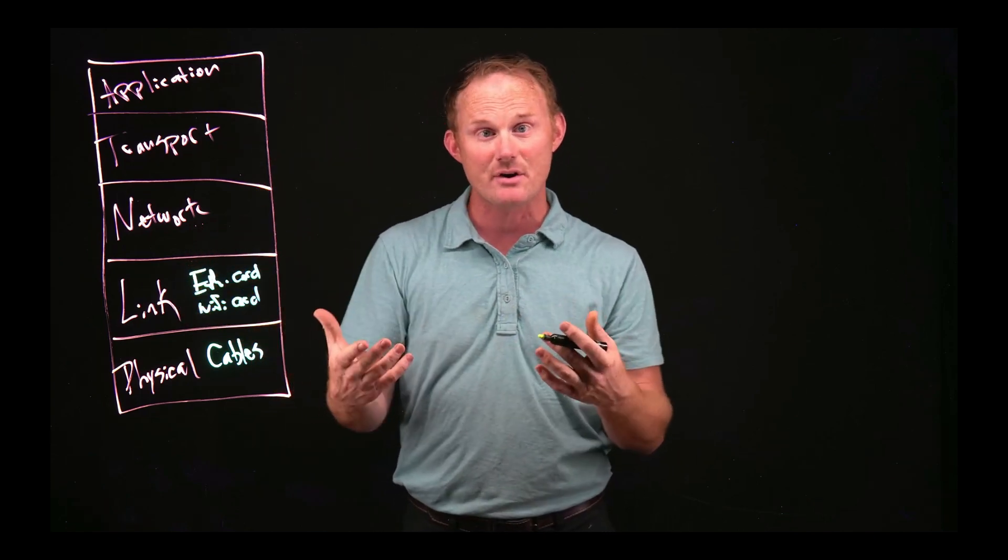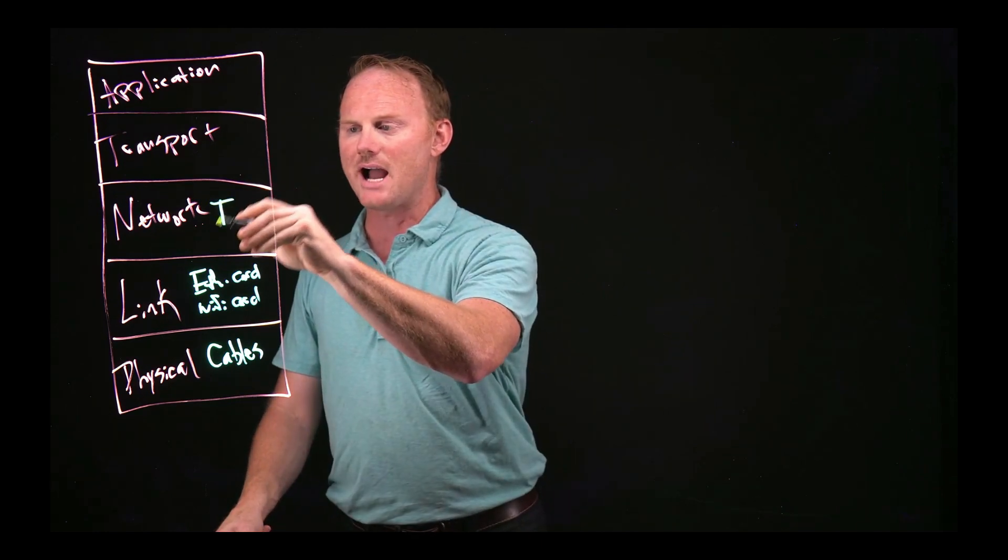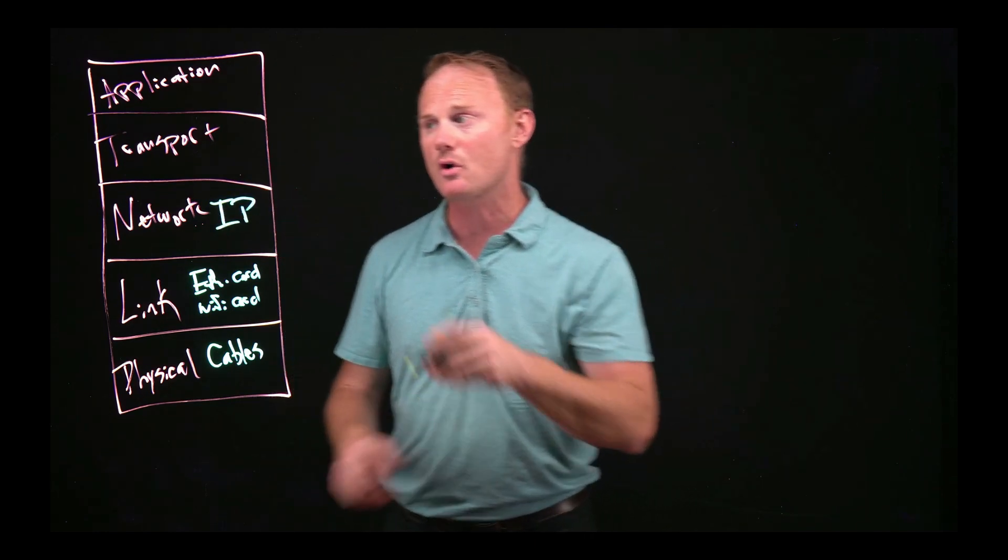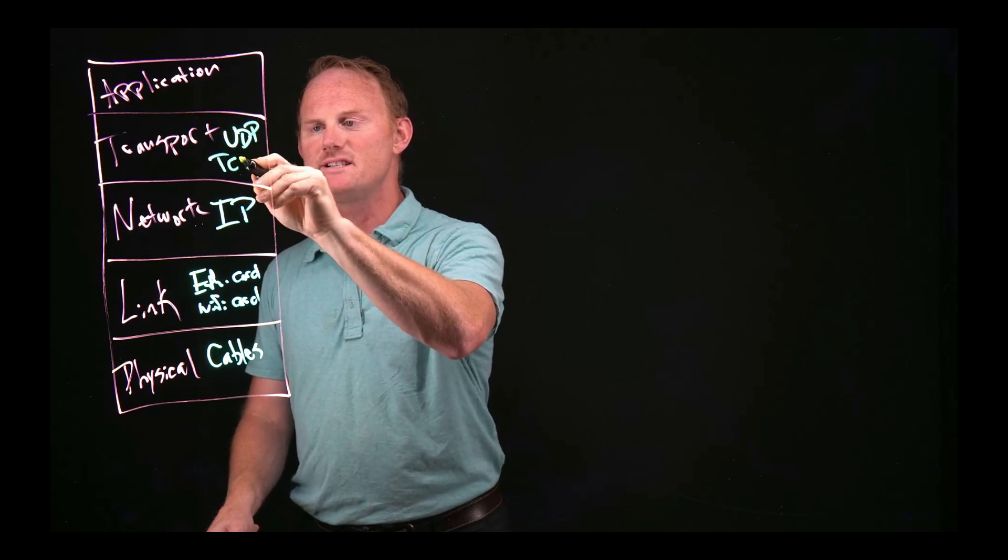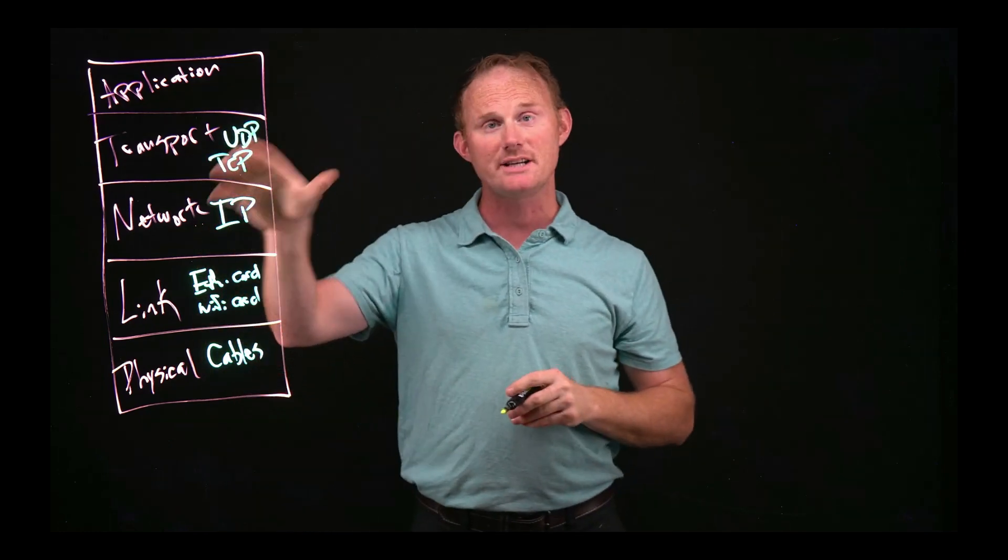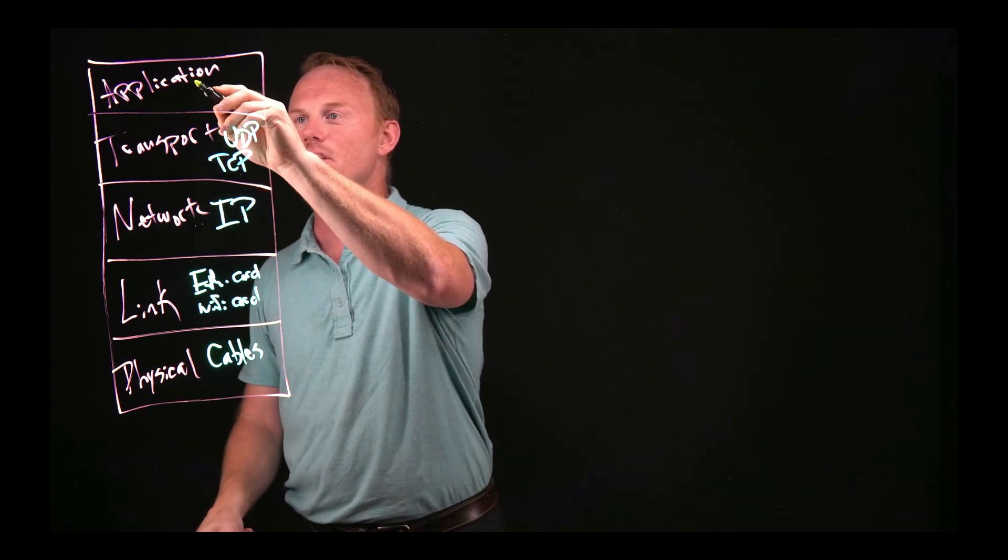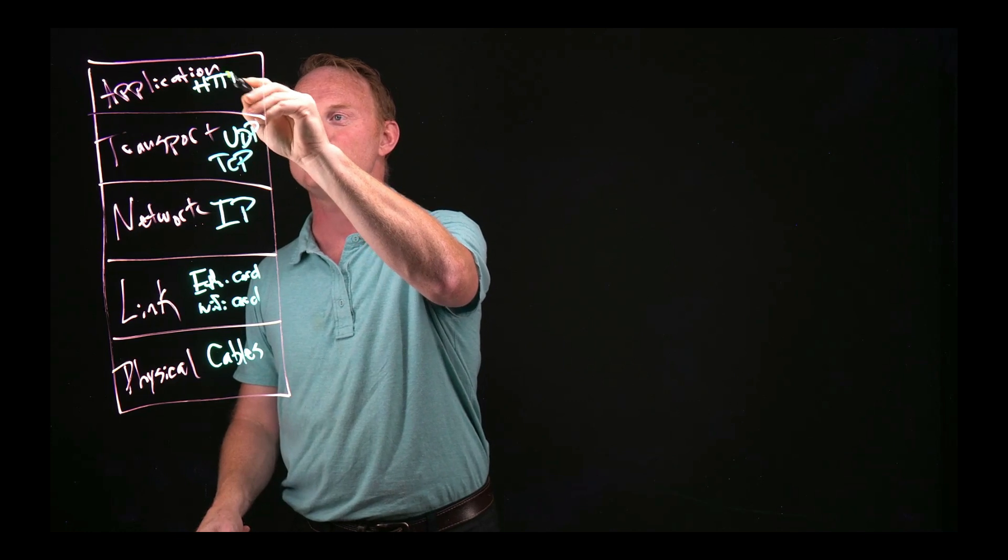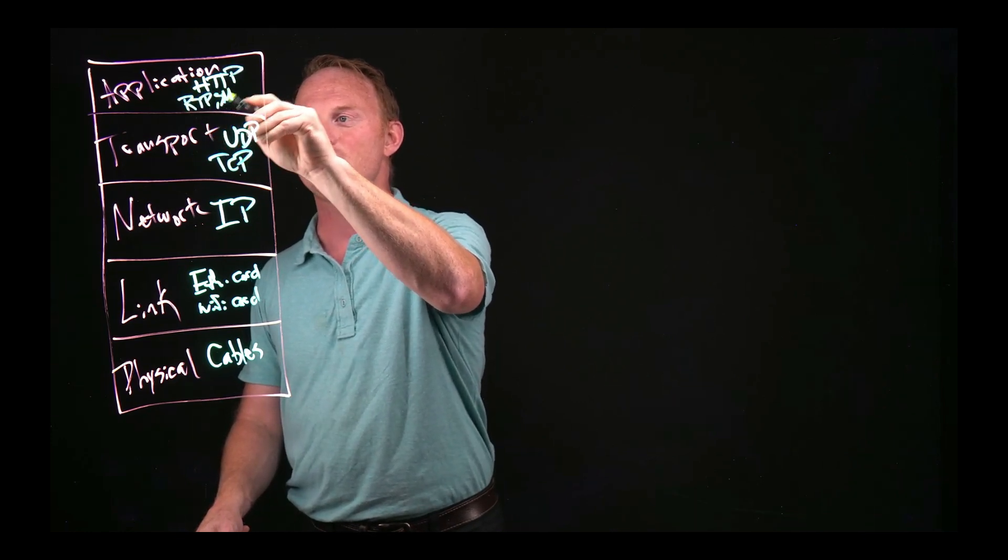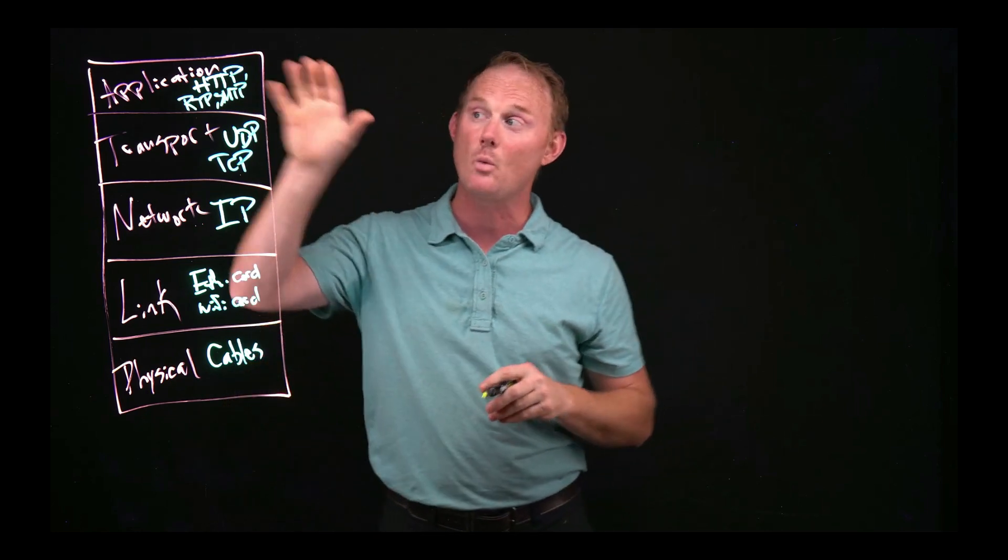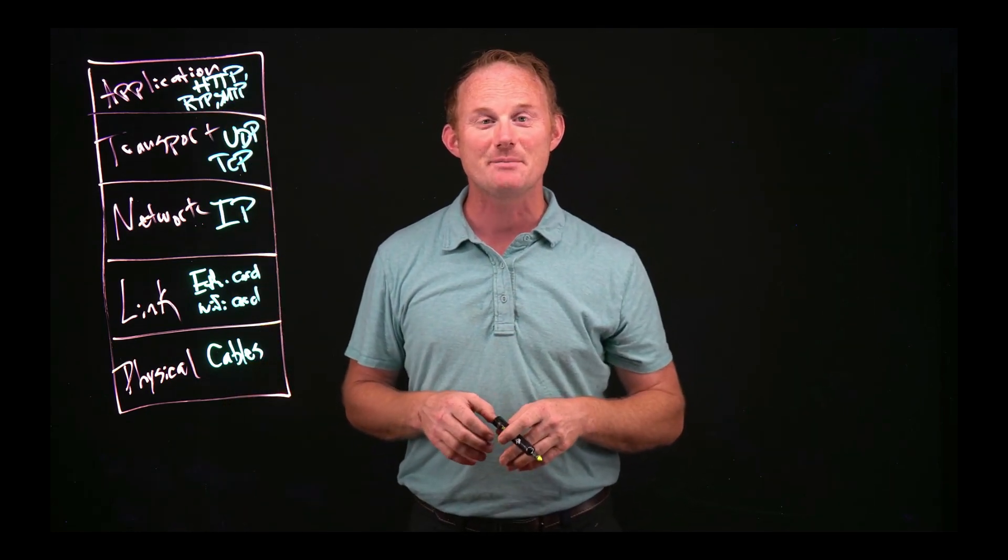Again, it's like an Ethernet card or a Wi-Fi card. The network layer is going to be IP, which stands for Internet Protocol. Transport is going to be either UDP or TCP. You may have heard TCP, IP together. That's the Internet suite. At the top, the application layer, your good friend, HTTP. There's also RTP, SMTP, and a whole bunch of others you can look up. But we will talk through HTTP because that's what you are most likely to be familiar with.